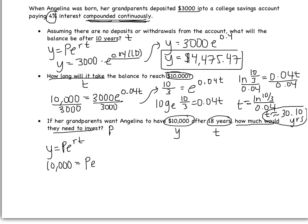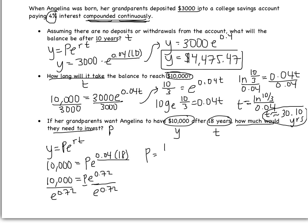I know R is still 4%, or 0.04, and T is 18. Simplifying the exponent first: 0.04 times 18 equals 0.72, so I have 10,000 equals P times E to the 0.72. Since P and E to the 0.72 are being multiplied, I divide both sides by E to the 0.72. So P equals 10,000 divided by E to the 0.72. Using the calculator, this gives $4,867.52.